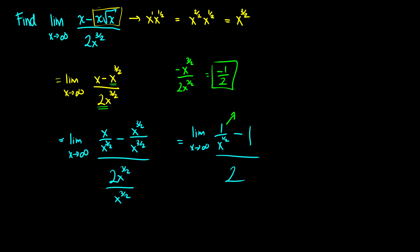We know that 1 over x to the 1 half is going to tend to 0, because the denominator is growing more quickly than the numerator — the numerator is a constant, so this ratio tends towards 0. The constants don't have variables so they won't change. This gives us 0 minus 1 over 2, which is our limit of negative 1 half. This is also the horizontal asymptote for the function.